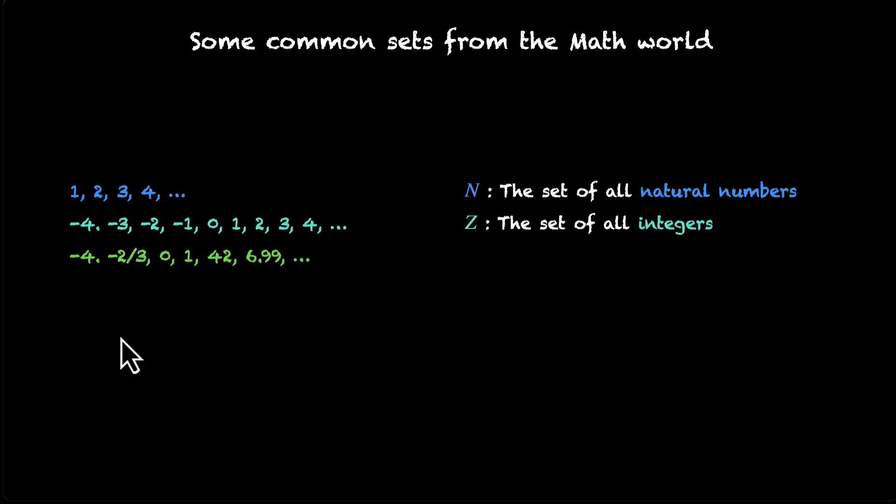Then we have this set where we also add fractions. This set is called the set of all rational numbers and it is denoted by Q. And then we have the set of all real numbers where we have added square root of 2, pi, e, etc. These are all irrational numbers. So when we add rational numbers and irrational numbers, together we get the set of all real numbers and that's denoted by the capital letter R.